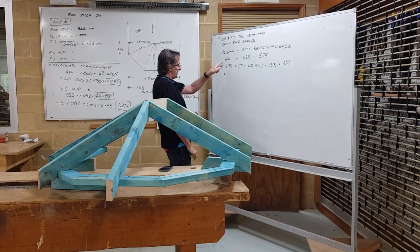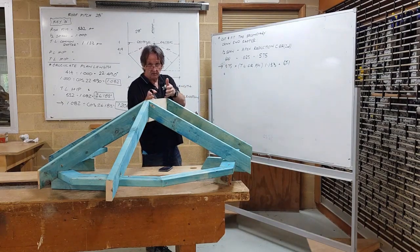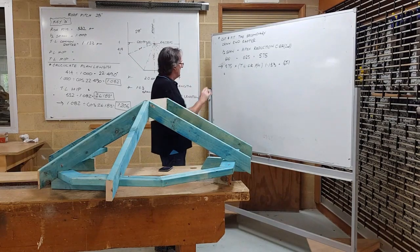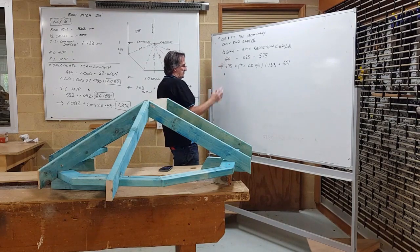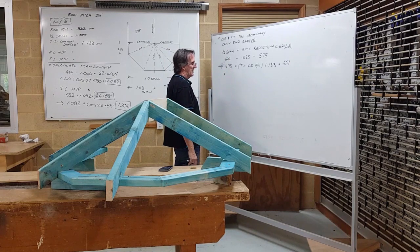Again it makes no difference what the half span of the job is. For the demonstration for you all it is a model so you can see what's going on 600, but it could be 3.6 for full size job construction. Makes no difference.